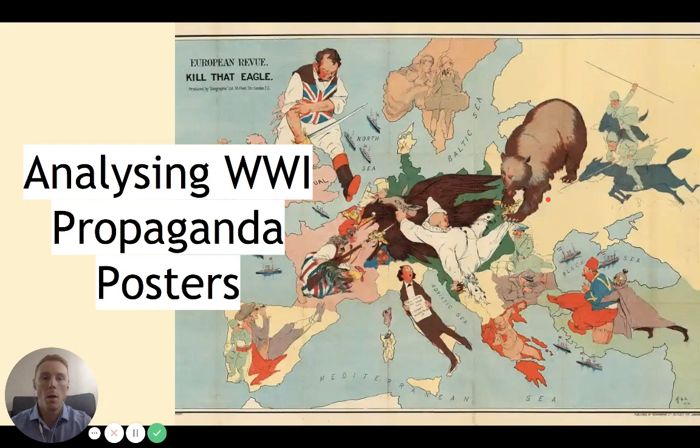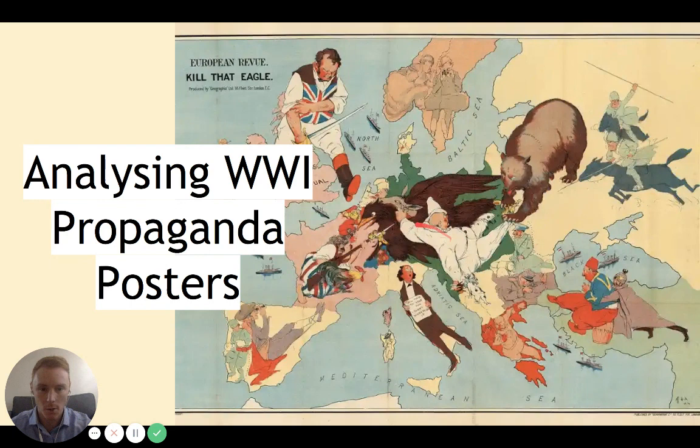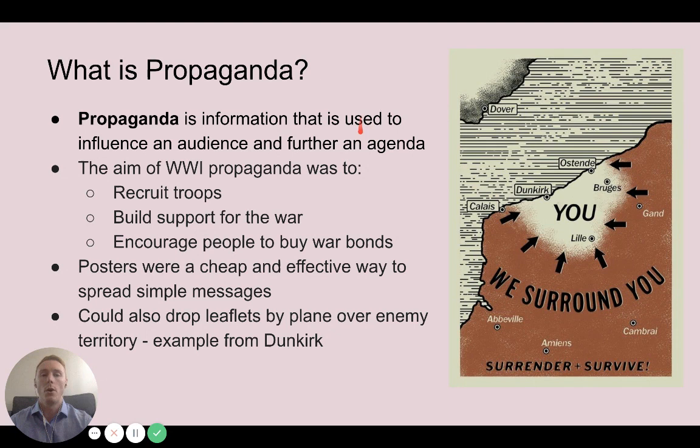This is an interesting map from World War I showing propaganda where countries are depicted as different cartoon characters or animals. We've got a British bloke, a big Russian bear, Russian Cossacks on horses, and Austria-Hungary and Germany in the middle like a clown being pulled apart and attacked by different countries. There's a big eagle and it says 'Kill that eagle' — it's a way of persuading people.